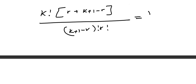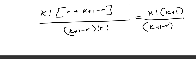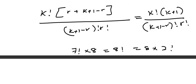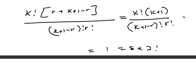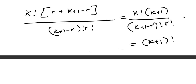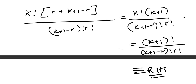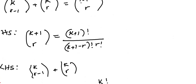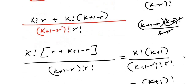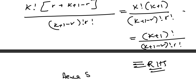On top we have k factorial times (k plus 1), and the denominator is (k plus 1 minus r) factorial times r factorial. Since k factorial times (k plus 1) equals (k plus 1) factorial, we can write this as (k plus 1) factorial over (k plus 1 minus r) factorial times r factorial. This is exactly the same as the right hand side, so hence shown. That's how we prove this identity.